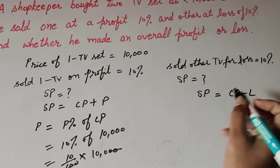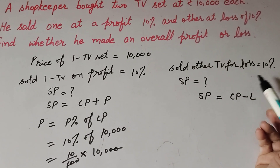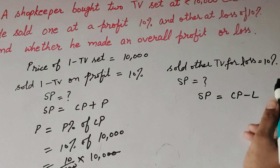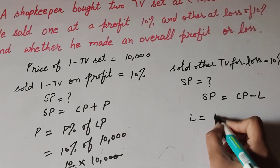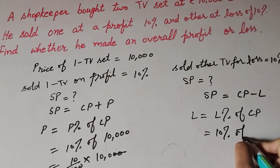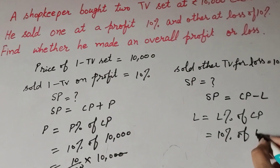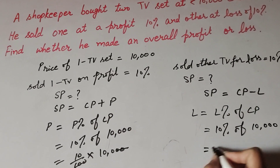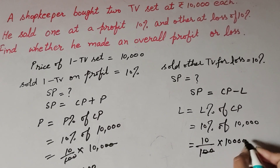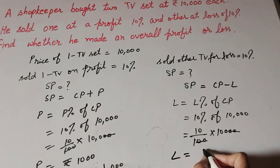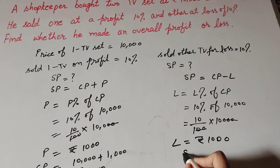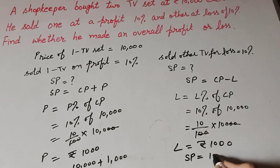Now we find the selling price of the other TV sold at a loss of 10 percent. First we find the loss amount. Loss equals loss percentage of CP. Loss percentage is 10 percent, CP is 10,000. So loss equals 10 over 100 multiplied by 10,000, which equals rupees 1,000.